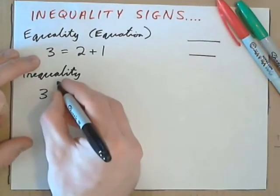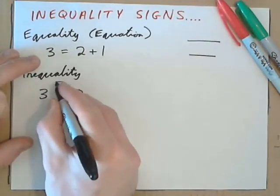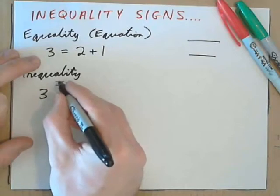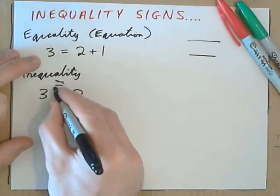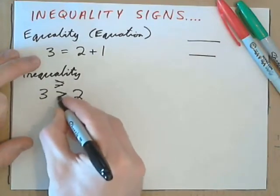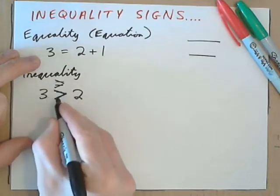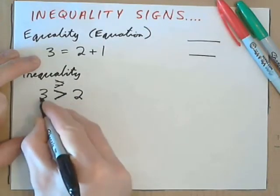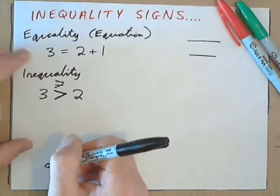So, it's like we take the equal sign and we tilt this this way, and tilt this one this way, so we get this. 3 is greater than 2. The gap is beside the bigger number. The point is beside the smaller number.